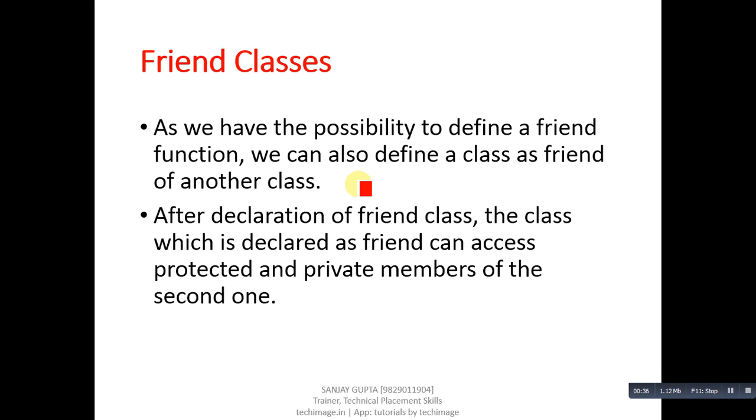Similarly, if you want to share all the information of a particular class with another, then you can implement the concept of friend classes. After declaration of friend class, the class which is declared as friend can access protected and private members of the second one.